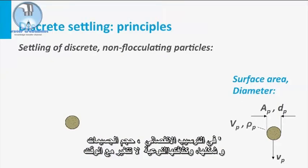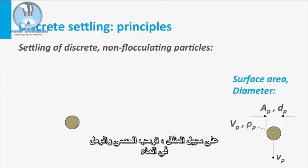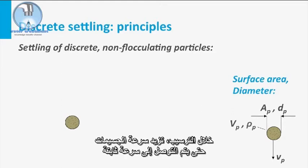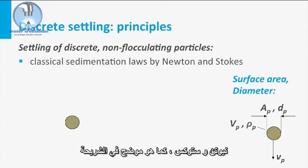In discrete settling, the particle size, shape and specific density do not change in time. Discrete settling is regarded as a non-interactive settling of particles from a dilute suspension — for instance, the settling of grit and sand in water. During the settling, the particle velocity accelerates until a constant velocity is reached. Discrete settling can be mathematically described using the classical sedimentation laws of Newton and Stokes, as illustrated in this slide.